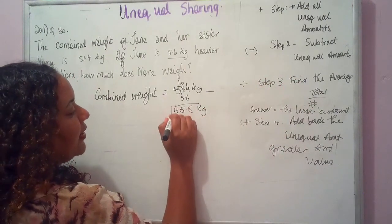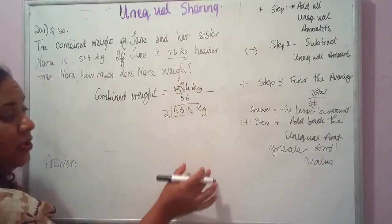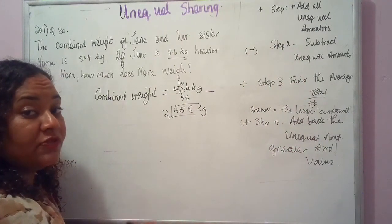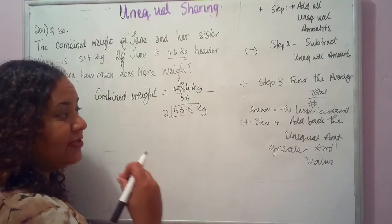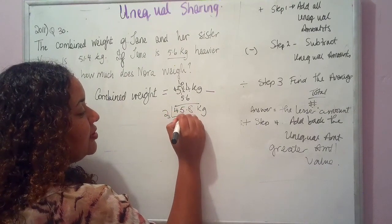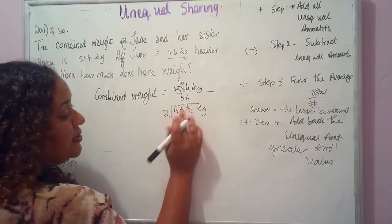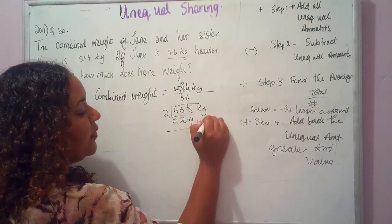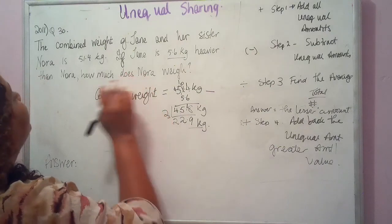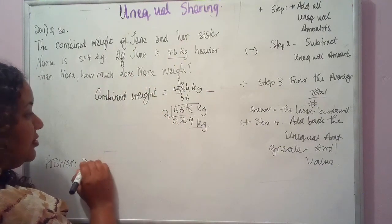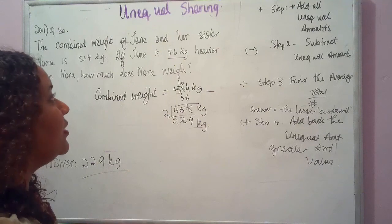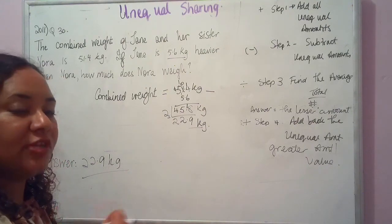Step three: find the average — divide by 2. Notice I'm continuing my workings in the same order as the steps, and I hope you can adopt this approach so you'll always remember them. 45.8 divided by 2 = 22.9 kilograms. This is the lesser weight, which is Nora's. So Nora weighs 22.9 kilograms.